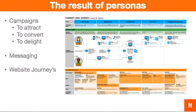So what happens once you have a set of personas? It gives you the ability to come up with campaigns that allow you to attract people. It gives you ideas to come up with campaigns to convert people and also to delight people, as well as campaigns for different buying stages — from awareness, engagement, consideration, purchase, and then fulfillment and retention.